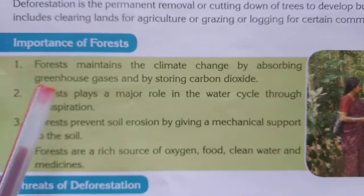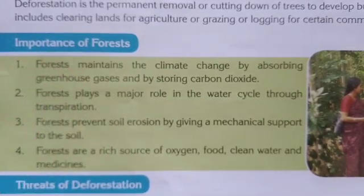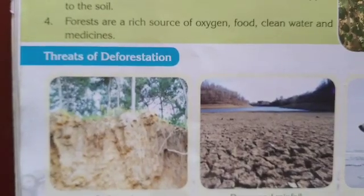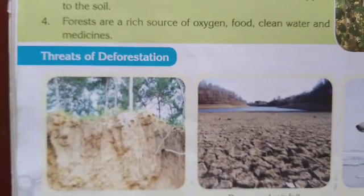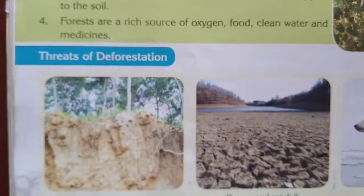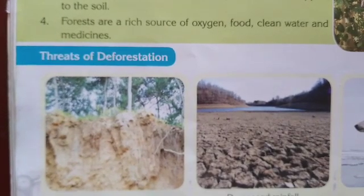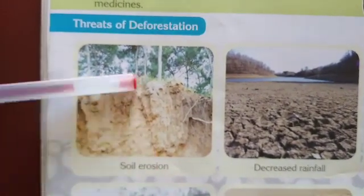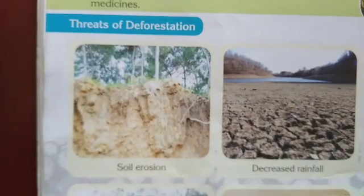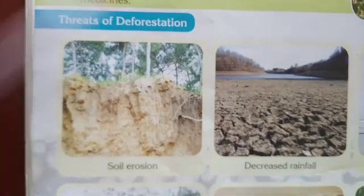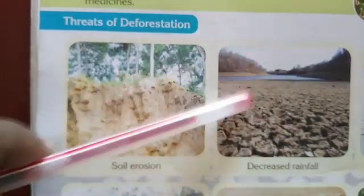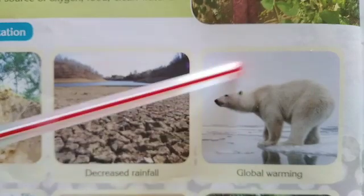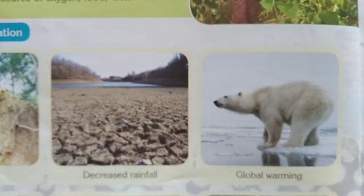Now, the second topic: threats of deforestation. Due to deforestation, different types of problems arise. First is soil erosion. Second is decrease in rainfall. Third is global warming.